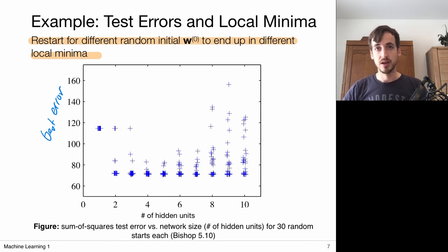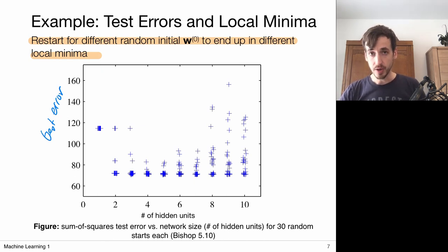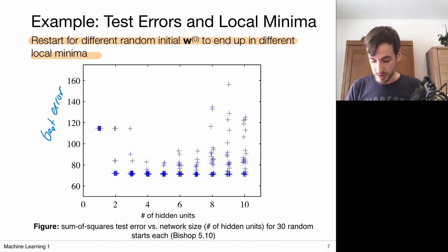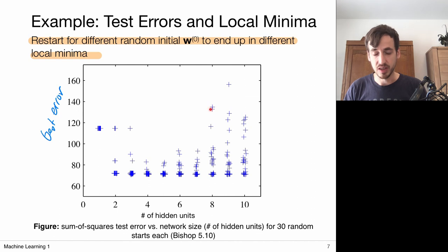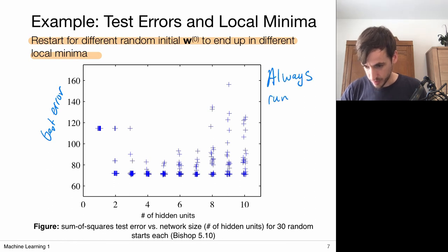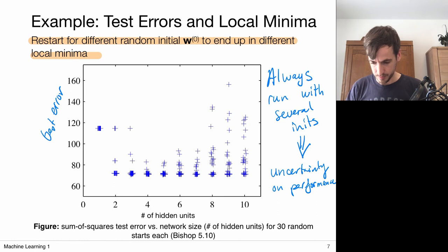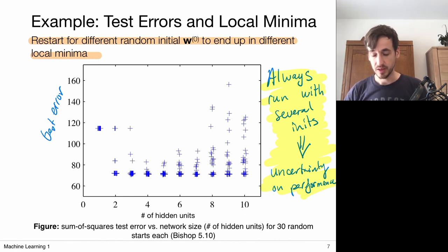This means that whenever you report errors or performance scores with neural networks, you should always rerun your training procedure with different initializations of w. If you run it once and end up with a very accurate model, and you report it as state of the art, then someone who re-implements your method may discover you were just very lucky. So be fair about the numbers you report and also report uncertainties on your performances. Always run with several initializations, because this allows you to gain some understanding of the uncertainty on your models.